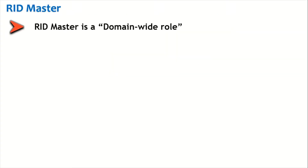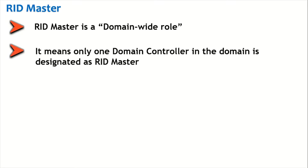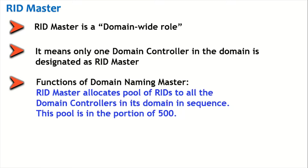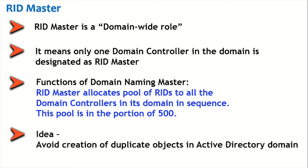RID Master is a domain-wide role, meaning only one domain controller in the domain is designated as RID Master. The RID Master is responsible for allocating a pool of RIDs to all the domain controllers in the domain in sequence. This pool of RIDs is simply a chunk of numbers — it will allocate, say, 500 numbers to every domain controller in sequence. The whole idea behind this mechanism is to avoid creation of duplicate objects in the Active Directory domain.